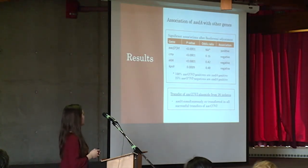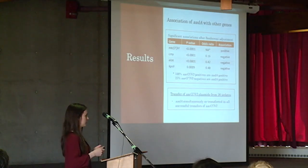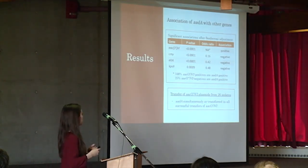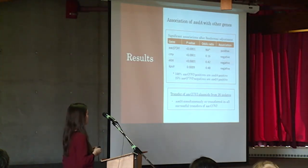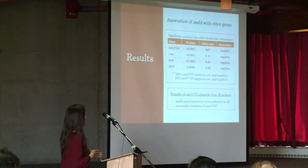Looking at the association of AADA — our spectinomycin resistance gene — with other genes, we found that AAC36 had a very strong positive association with AADA. When we transferred plasmids carrying AAC36 into new cells, all successful transfers also carried AADA. We also found a strong negative association between CMY and AADA, along with a few other negative associations between AADA and virulence factors.